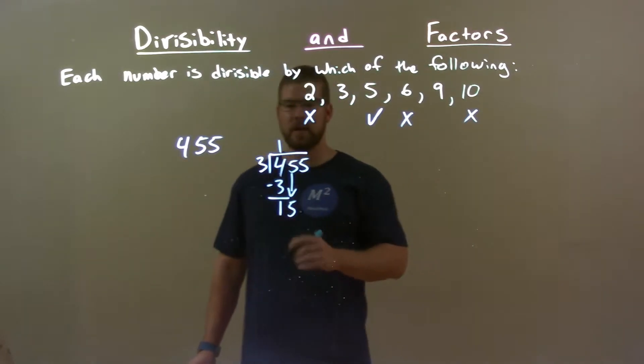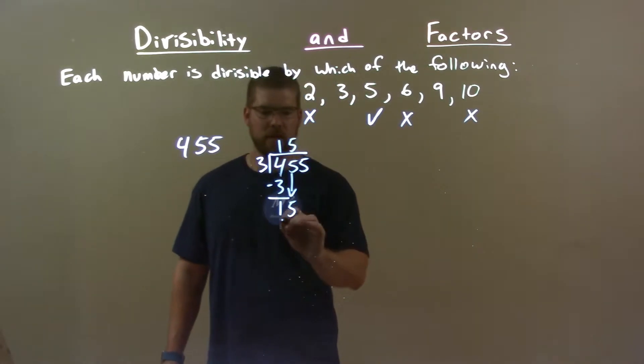Bring down the 5. 3 goes into 15, 5 times. 5 times 3, 15. Subtract the 2. Got a 0.